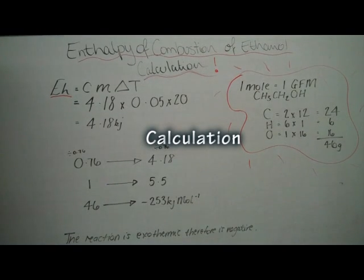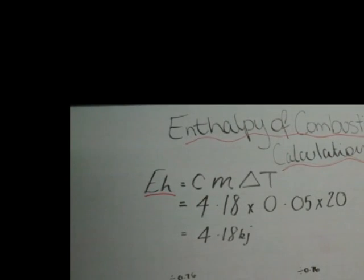The enthalpy of combustion of ethanol calculation: suppose 0.76 grams of ethanol has been burned and the temperature of the water has risen by 20 degrees Celsius. The heat energy gained by the water is calculated using the formula EH equals CM delta T.